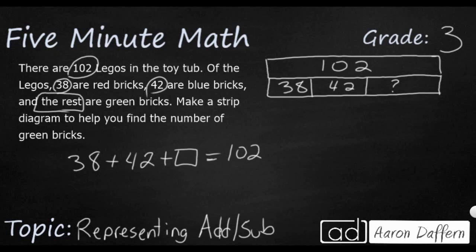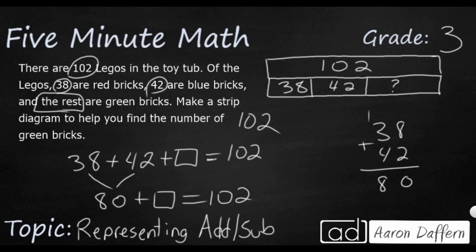So how can I actually figure out how many green bricks I have? Well, first, let's figure out what this is. 38 plus 42. If I just add that up vertically real quick, like my teacher taught me, that's going to give me 80. So 80 plus my unknown number, my green bricks, is going to make 102. Well, I know that I can use my fact families to write some addition sentences and some subtraction sentences that are in the same family. And I know that if I take 102 minus 80, that's going to give me my blank. And so my answer is going to be 22.